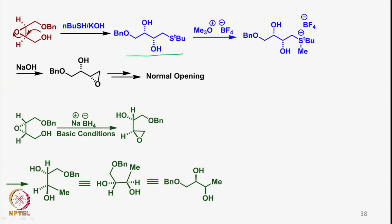Now if the same epoxide is reacted with butanethiol under basic conditions, we expect a particular thiol-containing molecule to form. When this diol is then reacted with a source of Me-plus—this is called the Meerwein reagent—which is a useful source of methyl-plus especially for the methylation of sulfur. Once that is done, when treated with base, we can deprotonate the OH group, which then attacks to remove the carbon-sulfur bond because this path has become a leaving group. We can then expect the epoxide to form in this way, allowing normal terminal epoxide opening as seen in other cases.